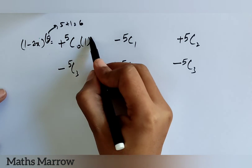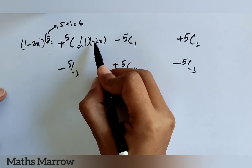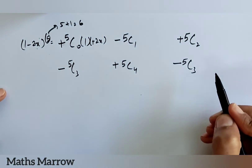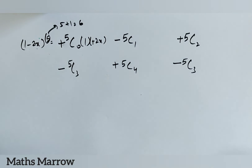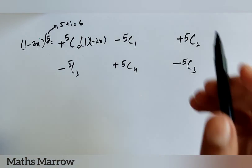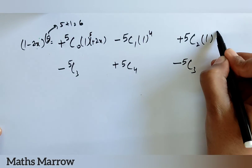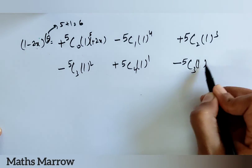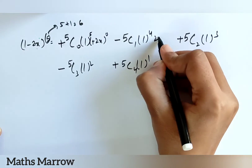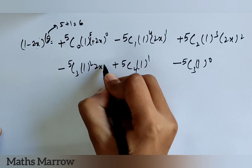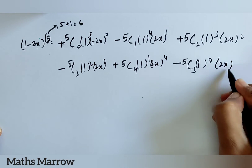The second term follows the same pattern as the first term, except with the plus/minus sign difference. The answer for plus and minus is the same only in the case when x and y variables are the same. Now here: 1 to power 5, 1 to power 4, 1 to power 3, 1 to power 2, then 1 to power 1, then 1 to power 0. And for 2x: we start from power 0, 1, 2, 3, 4, then 5.